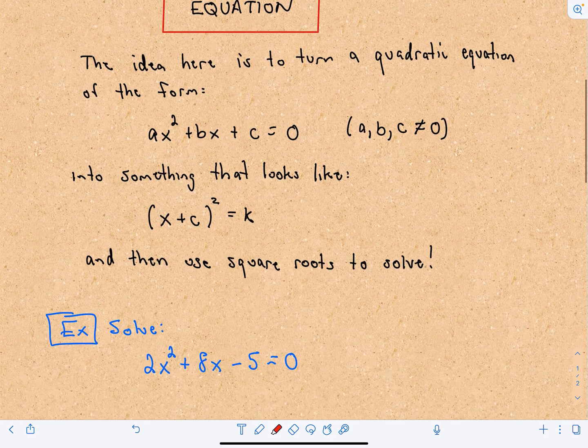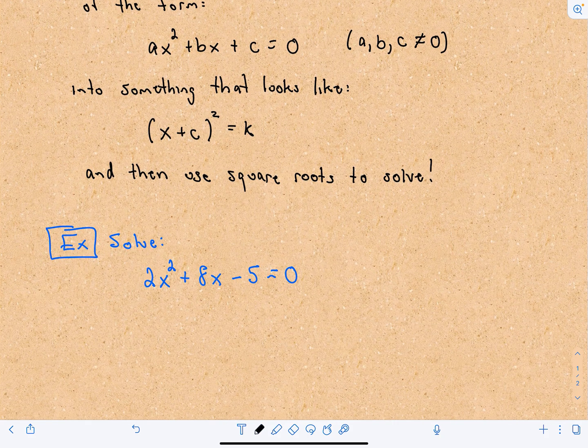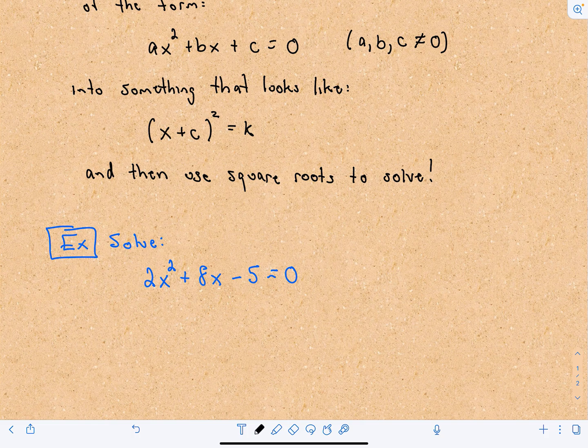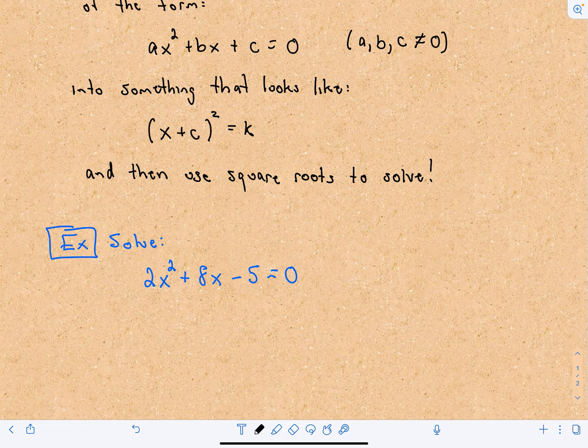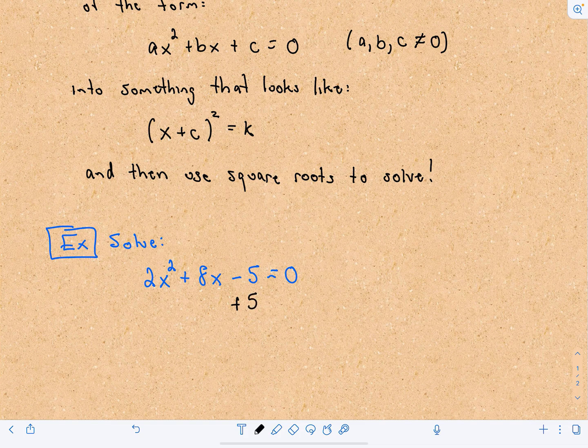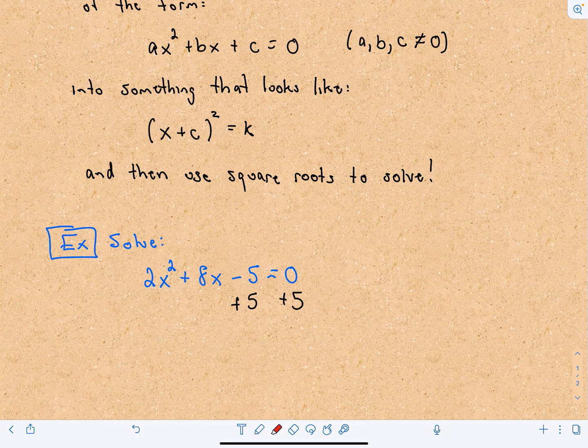I've made up a random example: 2x² + 8x - 5 = 0. The first thing I do is get rid of the constant by moving it to the other side. Since I have -5, I'm going to add 5 to both sides. Whatever your constant is, just move it over.